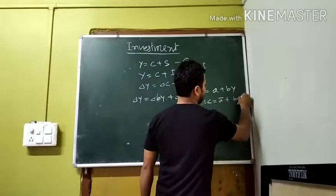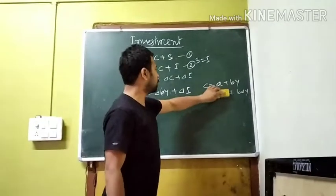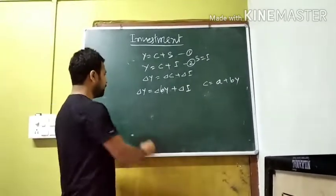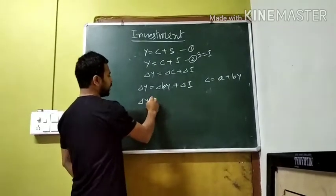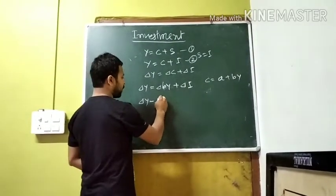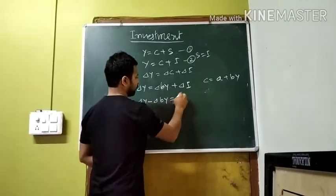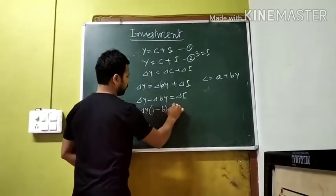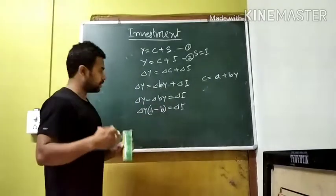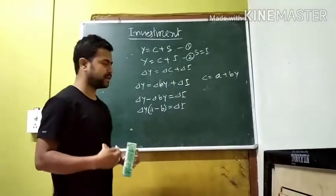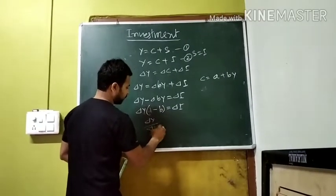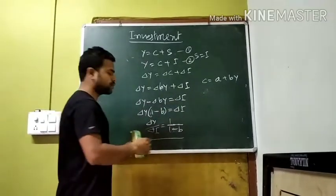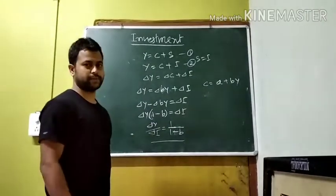You can see the remaining steps of the derivation. This is how you get the multiplier. It is a very simple mathematical derivation, so we can write it as 1 by 1 minus B.